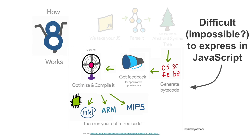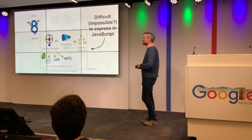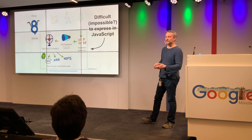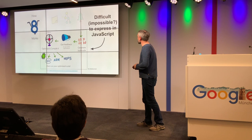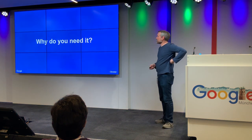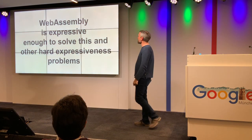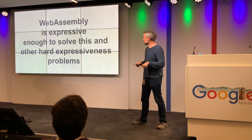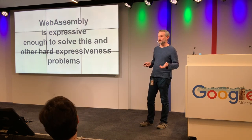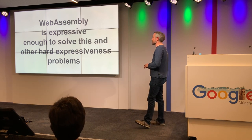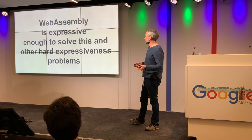We've actually been exploited in that very same way in practice, but that's something we try to make impossible, and that's what the bad guys try to do - figure out ways to do this when they're not supposed to. By default, it's impossible to express this in JavaScript. So, back to why you need WebAssembly. Here's the punchline: WebAssembly is expressive enough to solve the rest of that box and other hard problems that JavaScript can't. Not only is WebAssembly useful for cross-compilation - C++ running on the web - but there are things you simply can't do with JavaScript that you can do with WebAssembly.